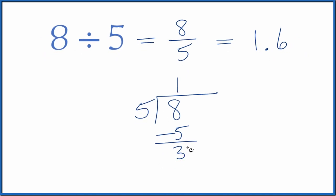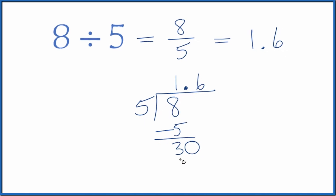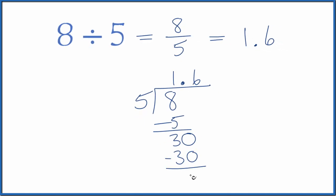5 doesn't go into 3, but we could call this 30 as long as we put a decimal point up here. So 6 times 5, that's 30, subtract, no remainder.